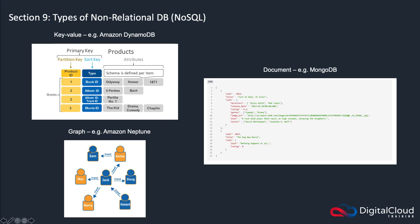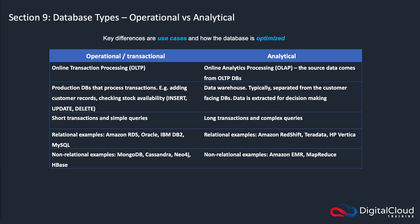You then have a graph database, which is where it's about relationships between people — a good example of that would be Facebook. You also have a document type of database, which uses JSON (JavaScript Object Notation), written into the code. Another distinction you need to understand is the difference between what we call operational and analytical databases. Here the difference is about the use cases — how you use the database and how the database has been optimized.